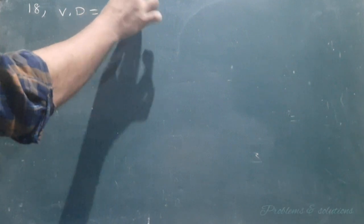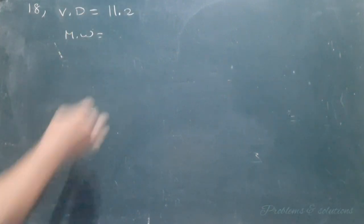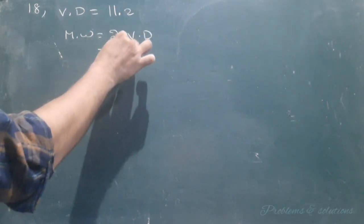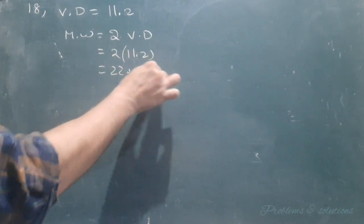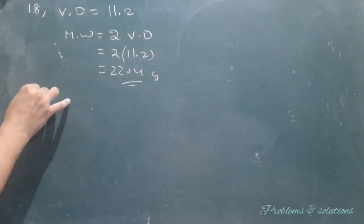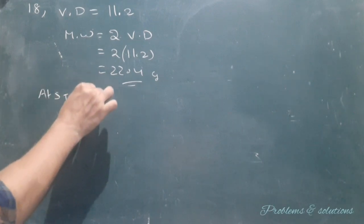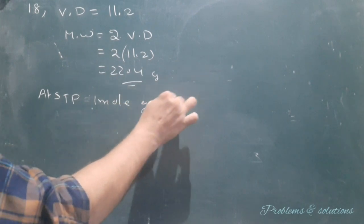So molecular weight of the gas is 2 into vapor density, so it is 2 into 11.2, that is 22.4 grams. So at STP, one mole of any gas occupies 22.4 liters.